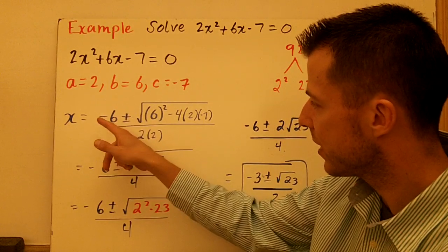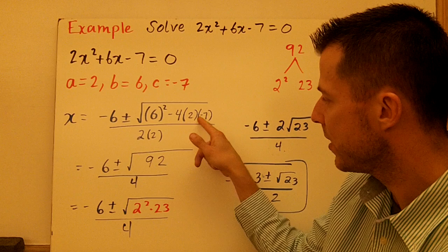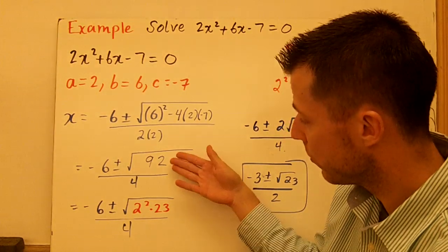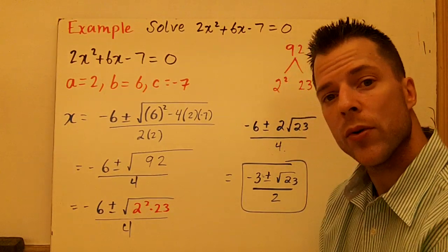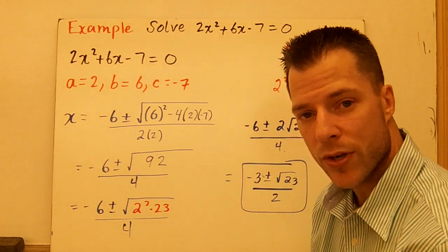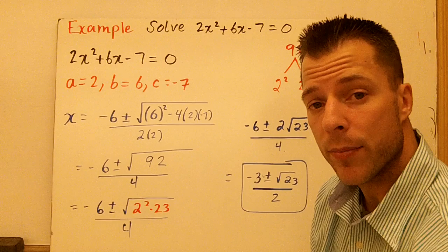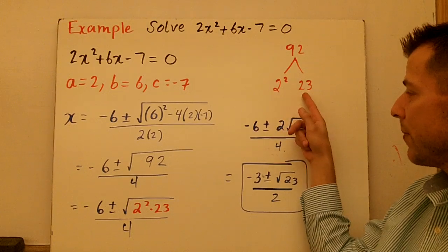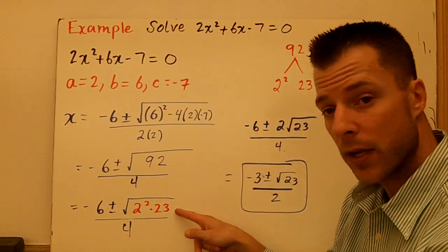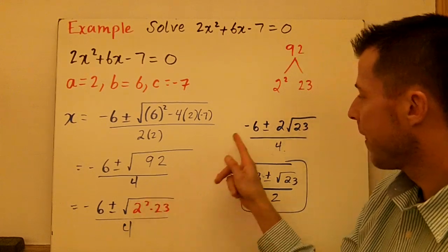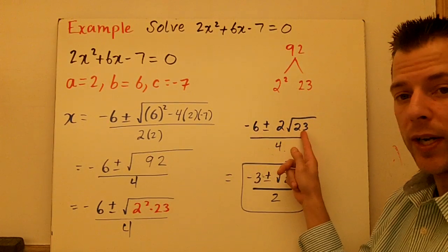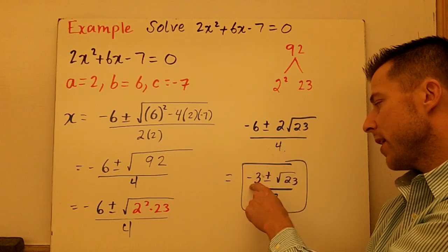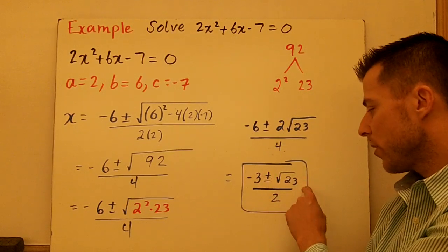The opposite of 6 is negative 6 plus or minus 6 squared minus 4ac. A is 2, C is negative 7. This is an example where we don't have a perfect square under the radical. We get 92. When we look at simplifying roots, we try to rewrite the number underneath with a perfect square. 92 is actually 4 times 23, or 2 squared times 23. That 2 is going to come out. So we have negative 6 plus or minus 2 root 23 all over 4. 4, 6, and 2 all have 2 in common, so I can simplify further, and we get negative 3 plus or minus root 23 over 2.